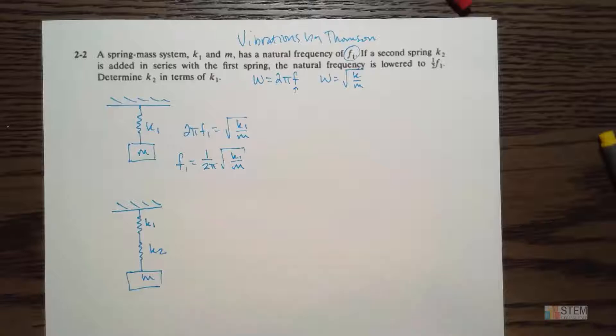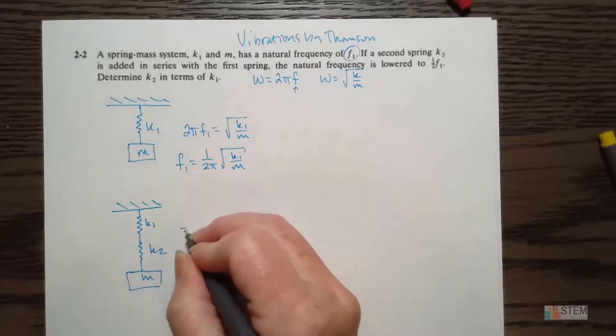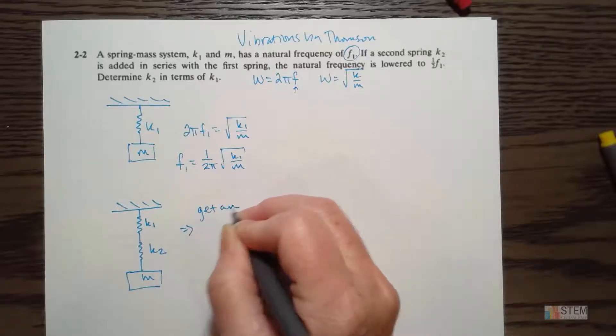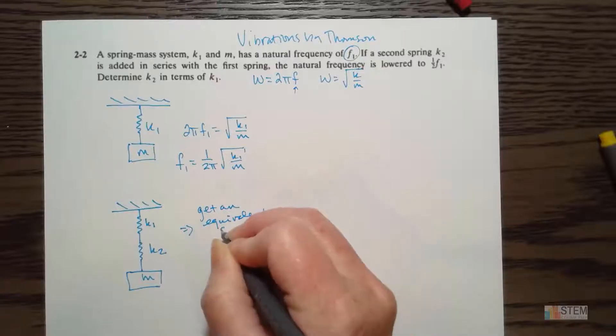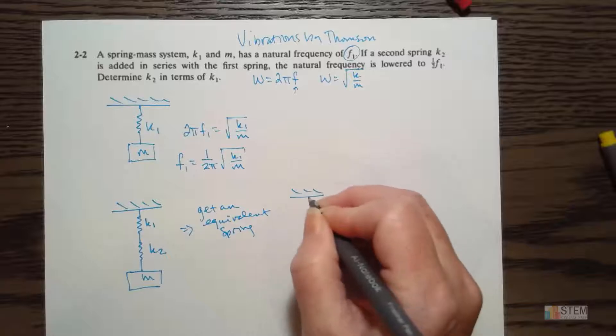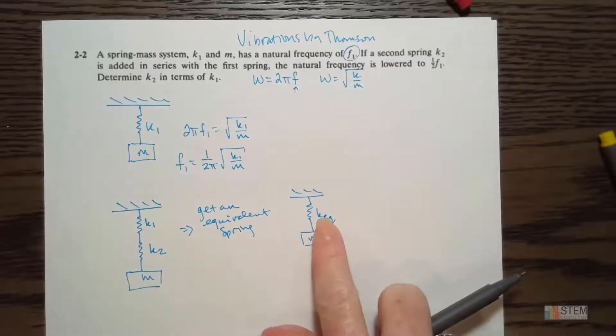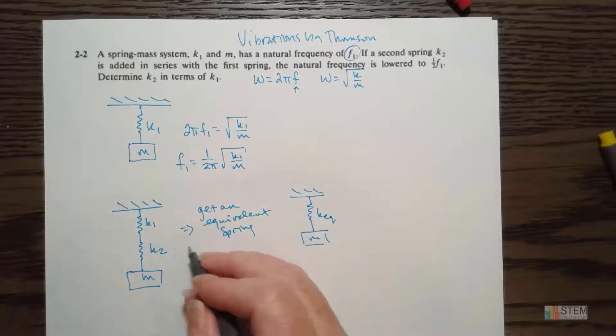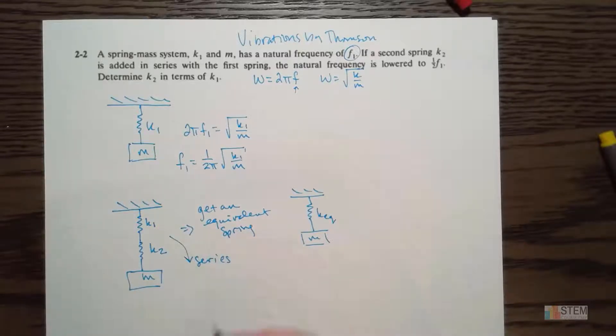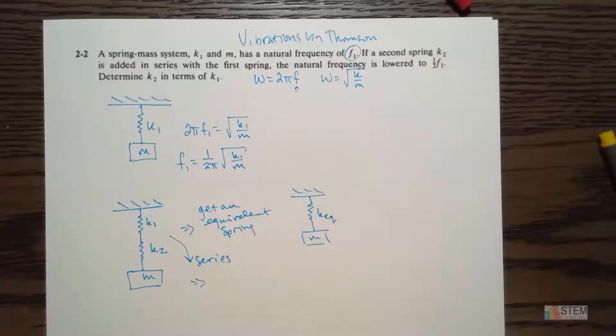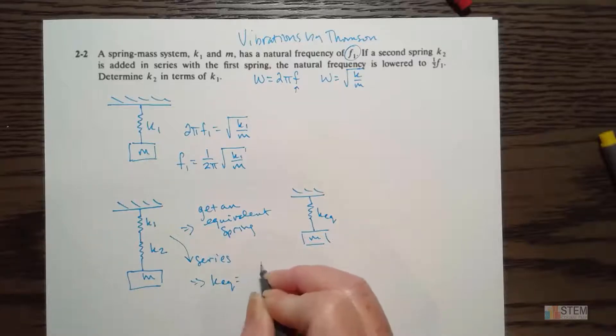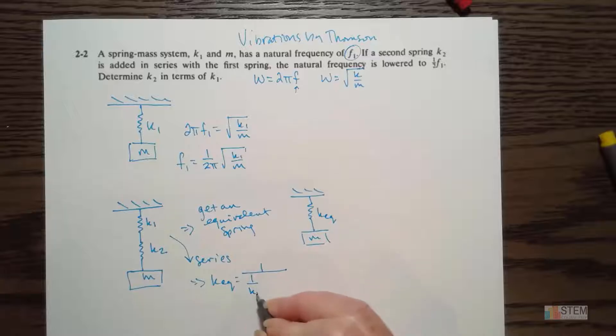I need to relate the frequency of this system to the frequency of this one. What I want to do, the easiest thing to do, since these are in series, I want to get an equivalent spring. That way I only have one spring, it'll be easier to deal with. So if I get an equivalent spring, essentially we'll have that. Let's find out what this equivalent k is. So these are in series.